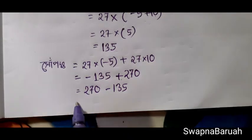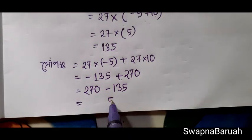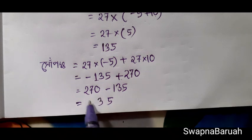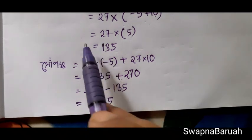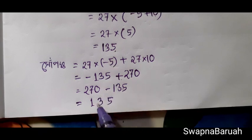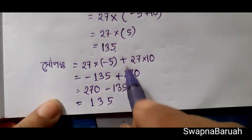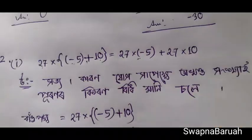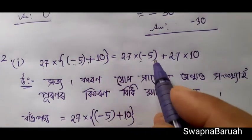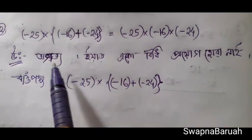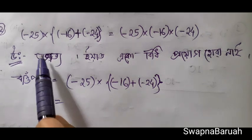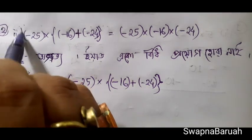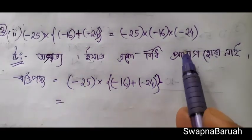So we have 270 plus minus 135. How much do we have? We have 2 plus 5 plus 5 plus 3 plus 2 plus 1. So we have 12 plus 135 plus 4 plus 135. So we have 2 plus 1, we have 5. So we have 2.